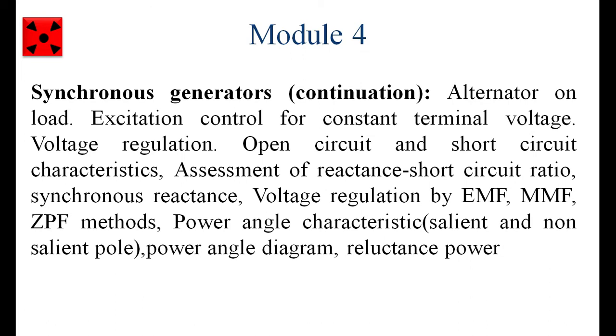In the case of the salient pole type of machine, we have a power which consists of two parts — that is a reluctance power. The importance of that is also studied in this particular module.